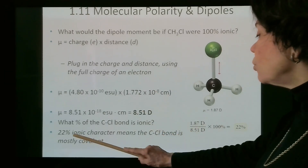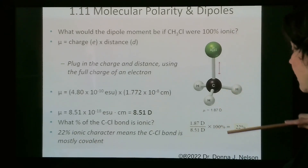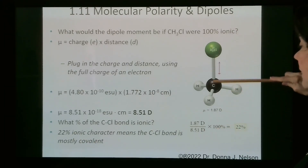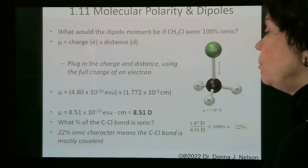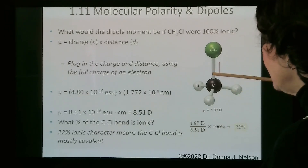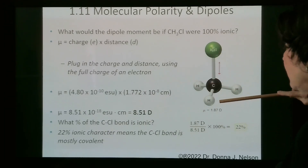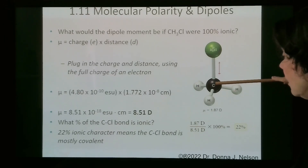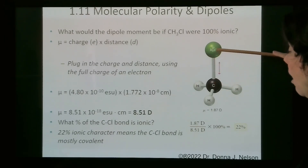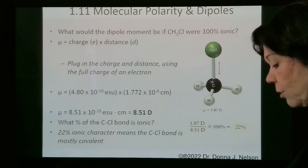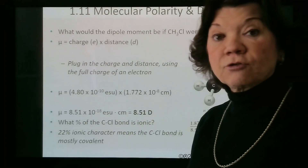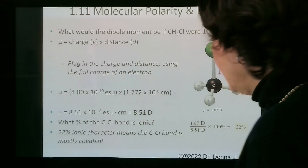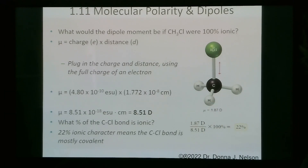What percent of the carbon-chlorine bond is ionic? Calculating this gives 22%. This tells you that the bond is 22% ionic, meaning it is mostly a covalent bond. Also, the electron density will be pulled off of carbon onto chlorine, which makes sense because chlorine is the third most electronegative atom in the periodic table, and it is attached to carbon, which is not very electronegative.